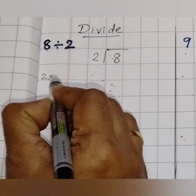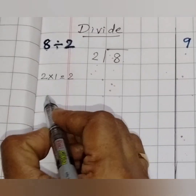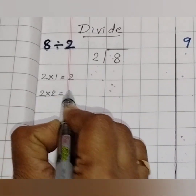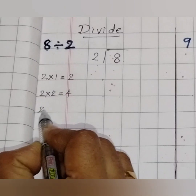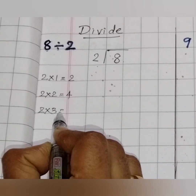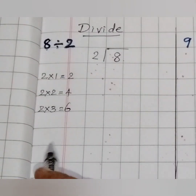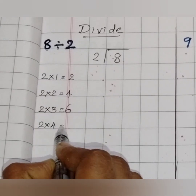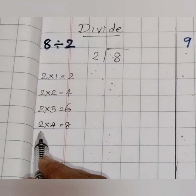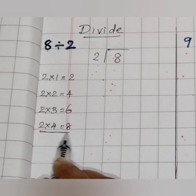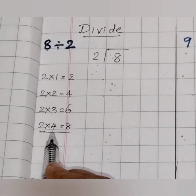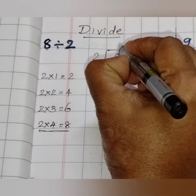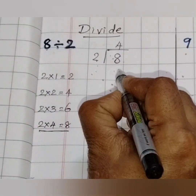Let me write the table. 2 ones are 2, 2 twos are 4, 2 threes are 6, and 2 fours are 8. So we got 8 here. 2 fours are 8.